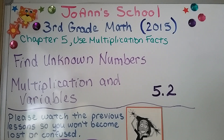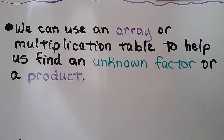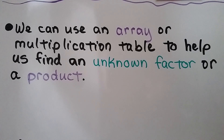Lesson 5.2: Find Unknown Numbers. We're going to talk about multiplication and variables. We can use an array or multiplication table to help us find an unknown factor or a product.